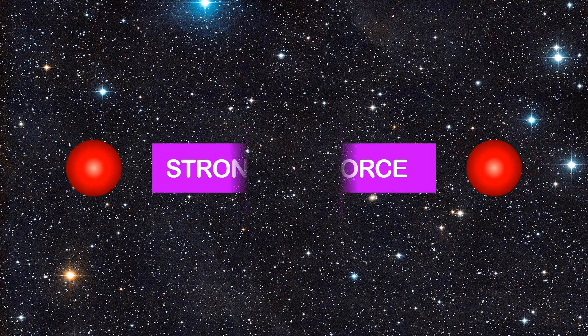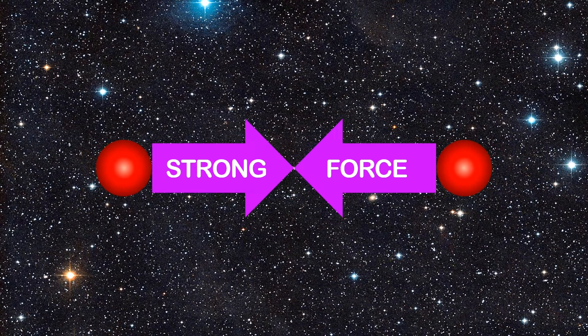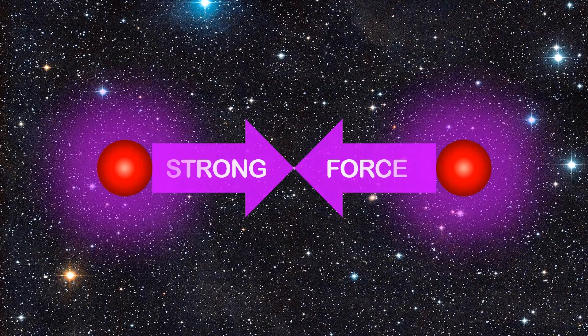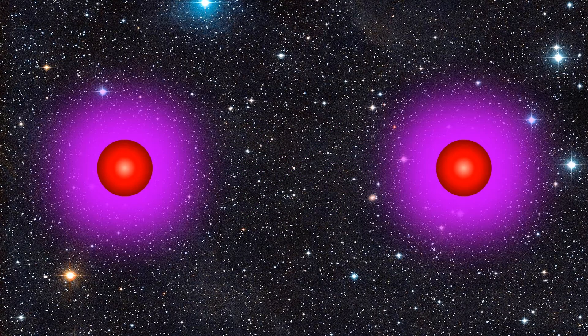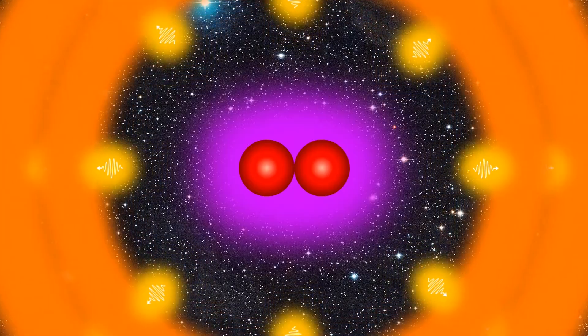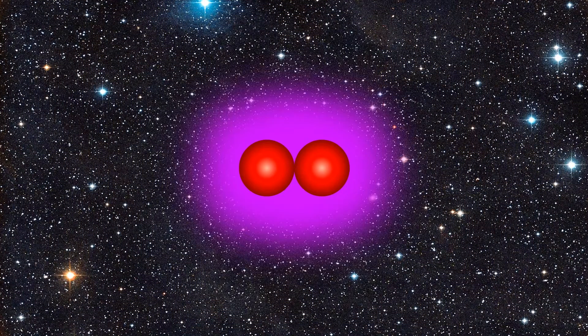When nuclei get very close, they're pulled together by the strongest force in the universe, the strong nuclear force. The nuclei then collide at enormous speeds, releasing huge amounts of energy just like those two rockets.